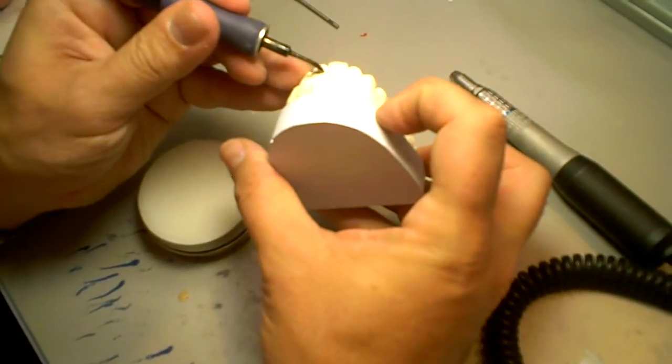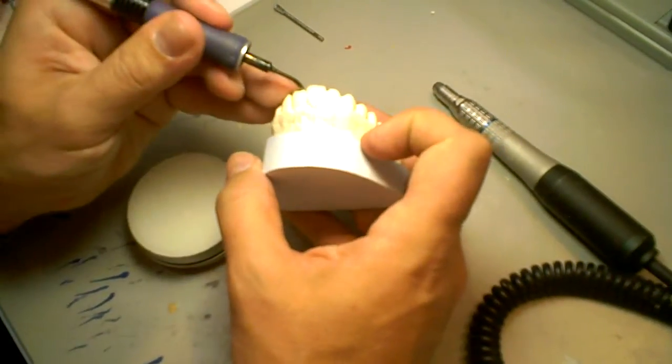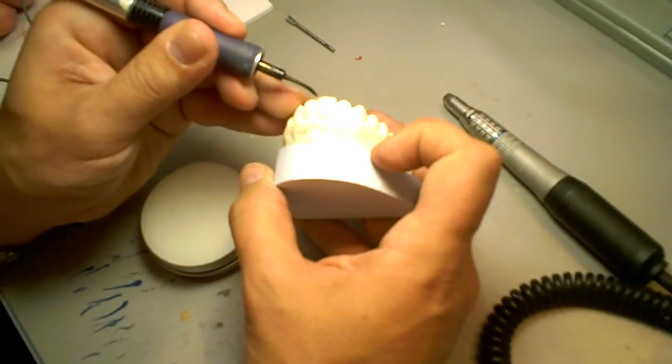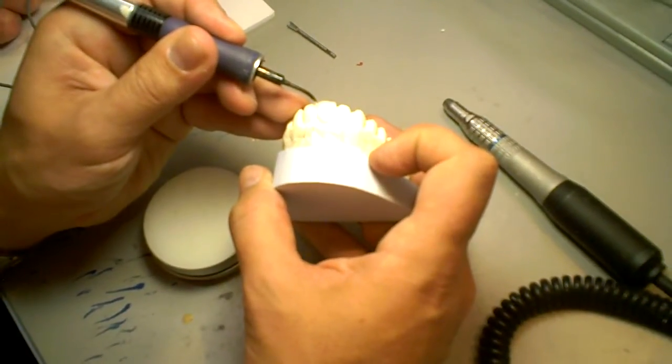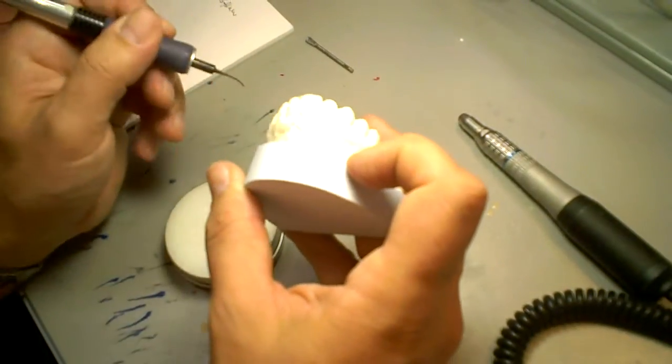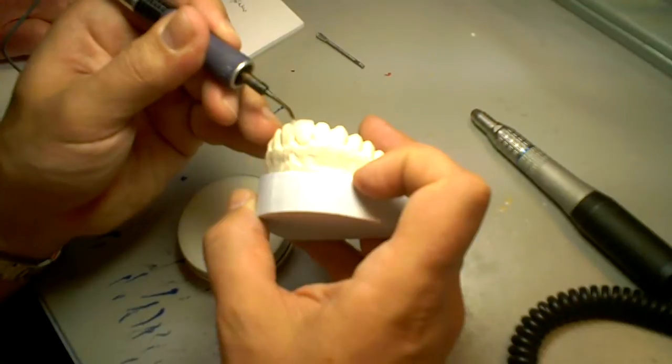So again, we're going to do the little case here. And what's going to happen to you, because you're not used to this waxer, is that the wax is just going to fly all over the place. Because you can blow on it and control it. And just like everything, it takes a little bit of practice.